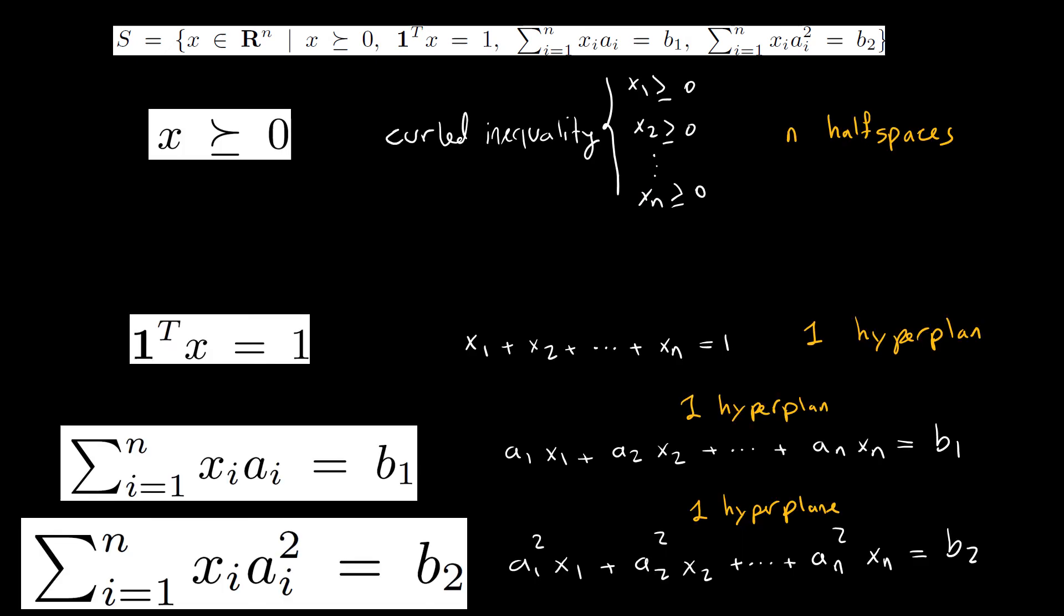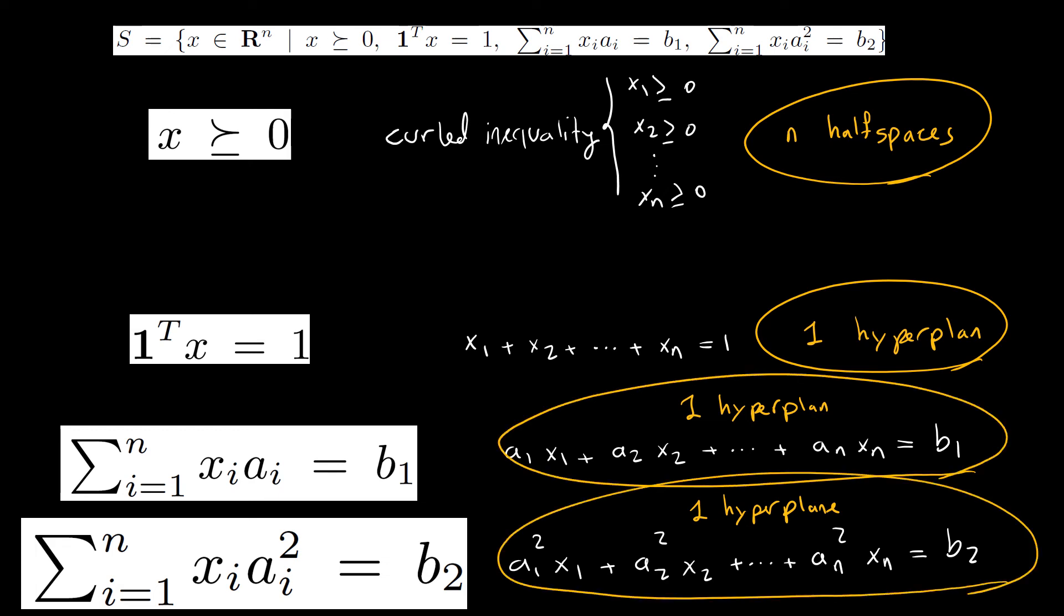Now let's put them together. We have n half spaces, one hyperplane here, one hyperplane here, and one hyperplane here. We ended up with n half spaces and three hyperplanes.